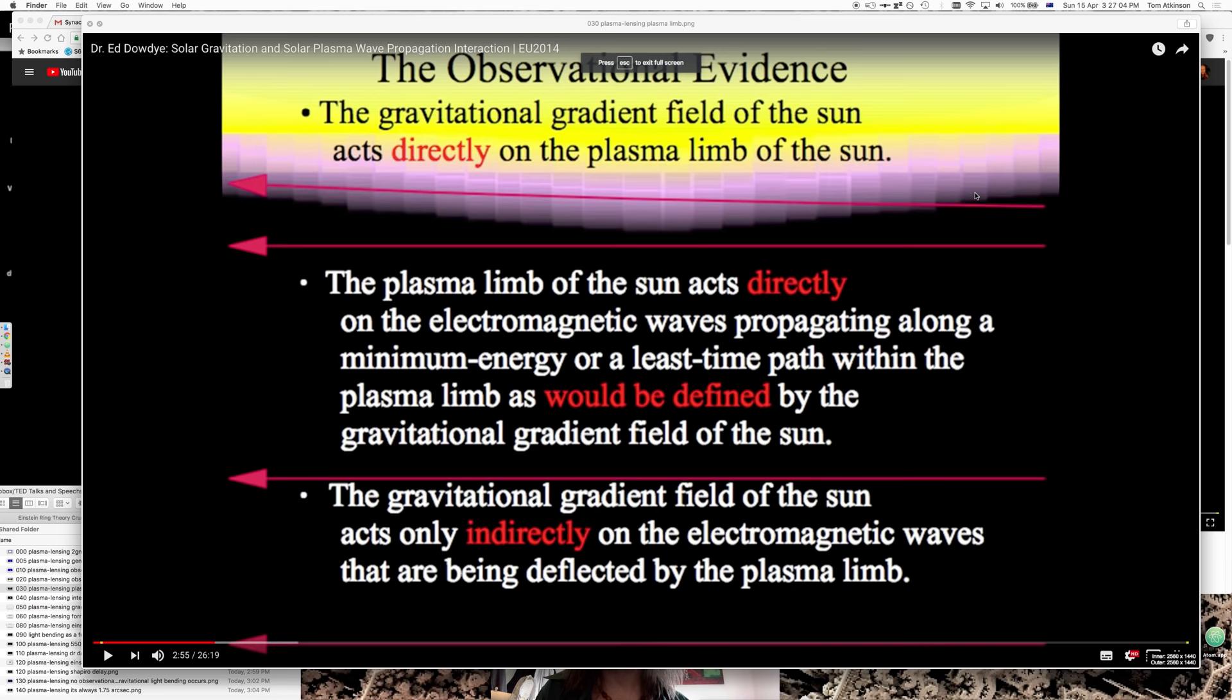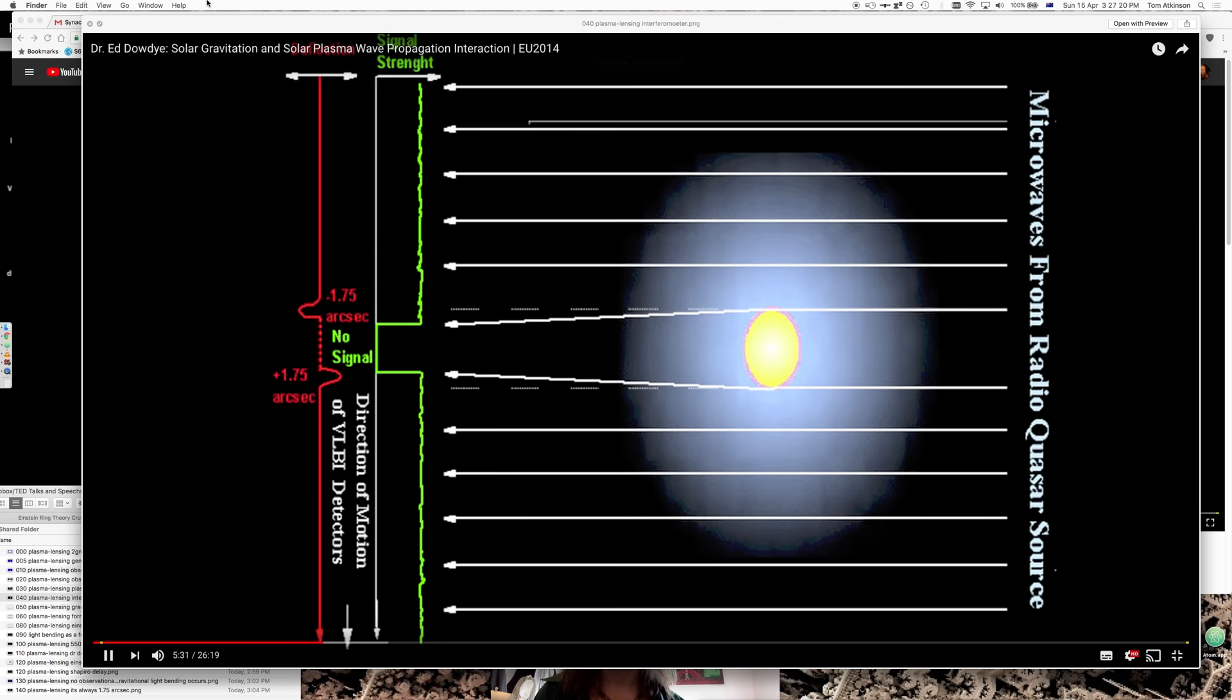It's actually the plasma limb, as he calls it, directly affects it. The gravitational gradient doesn't affect it so much. It's the plasma limb that does. This is really hardcore, discovered with an interferometer on a machine that must have been passing the sun. It picked up an increase in the solar wind and then a decrease of something.